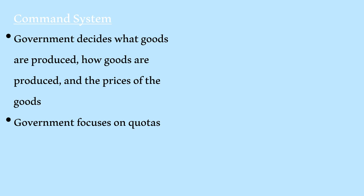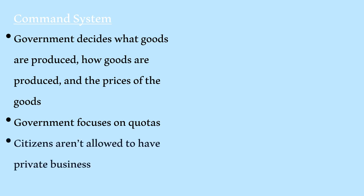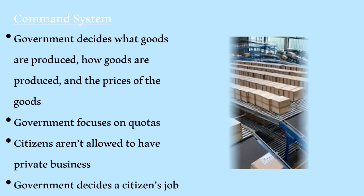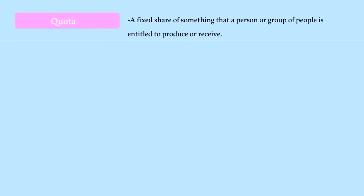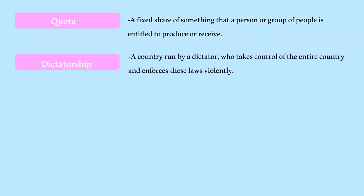This means citizens aren't allowed to have their own private businesses — the government decides the job of every citizen. The government pumps out a certain amount of products based on quotas. Many workers aren't happy with their jobs or the pressure of the quotas, but they can't complain because the government oversees everything they do. These command systems are usually found in dictatorships, and the governments here are usually very rough on the citizens.